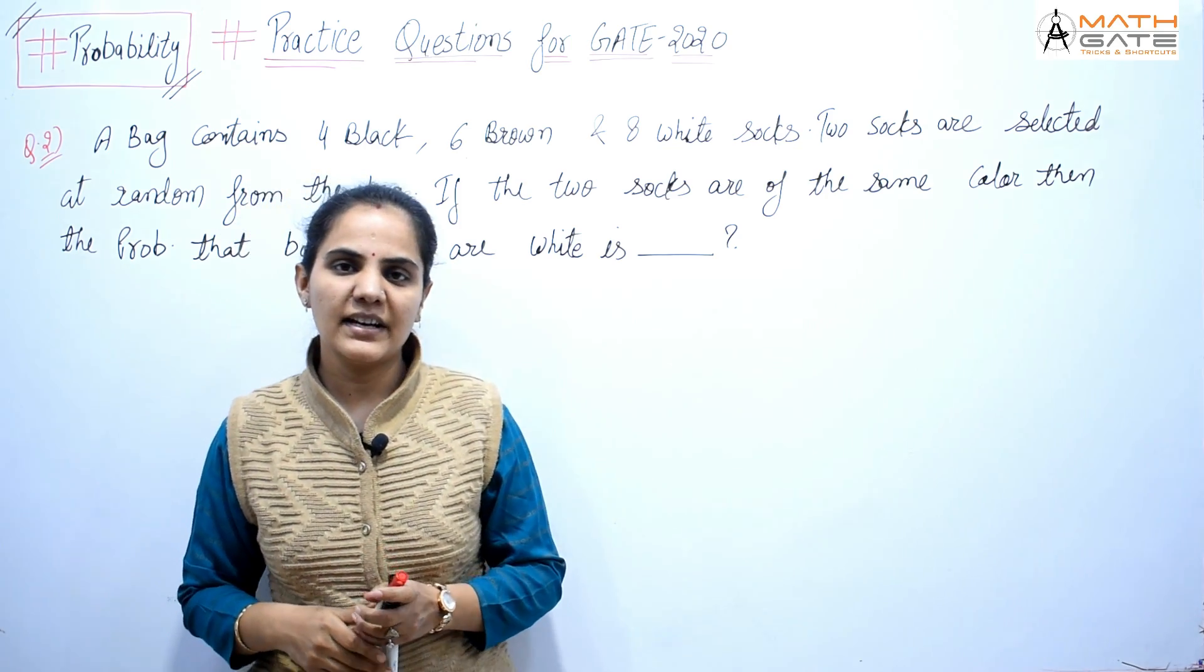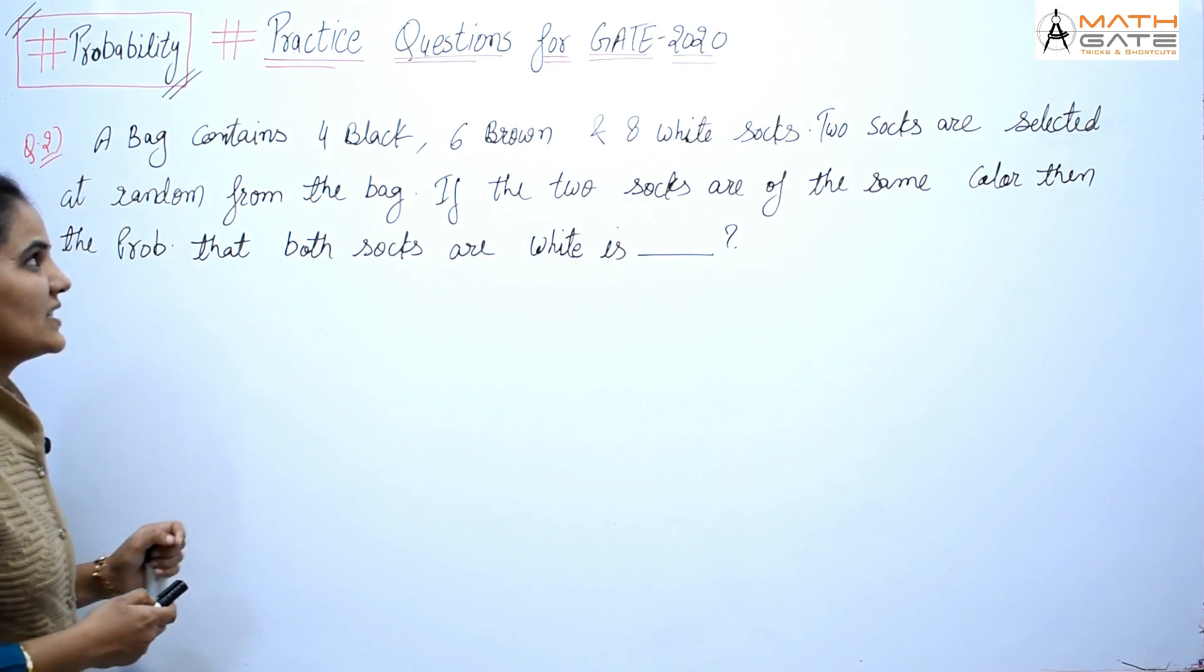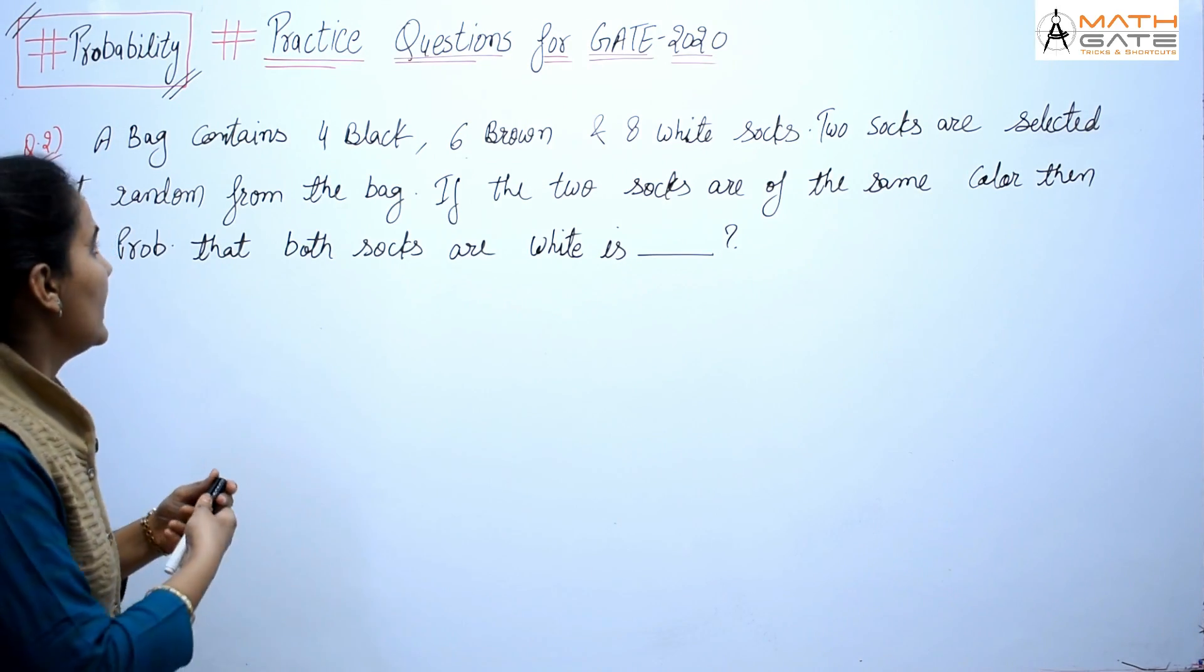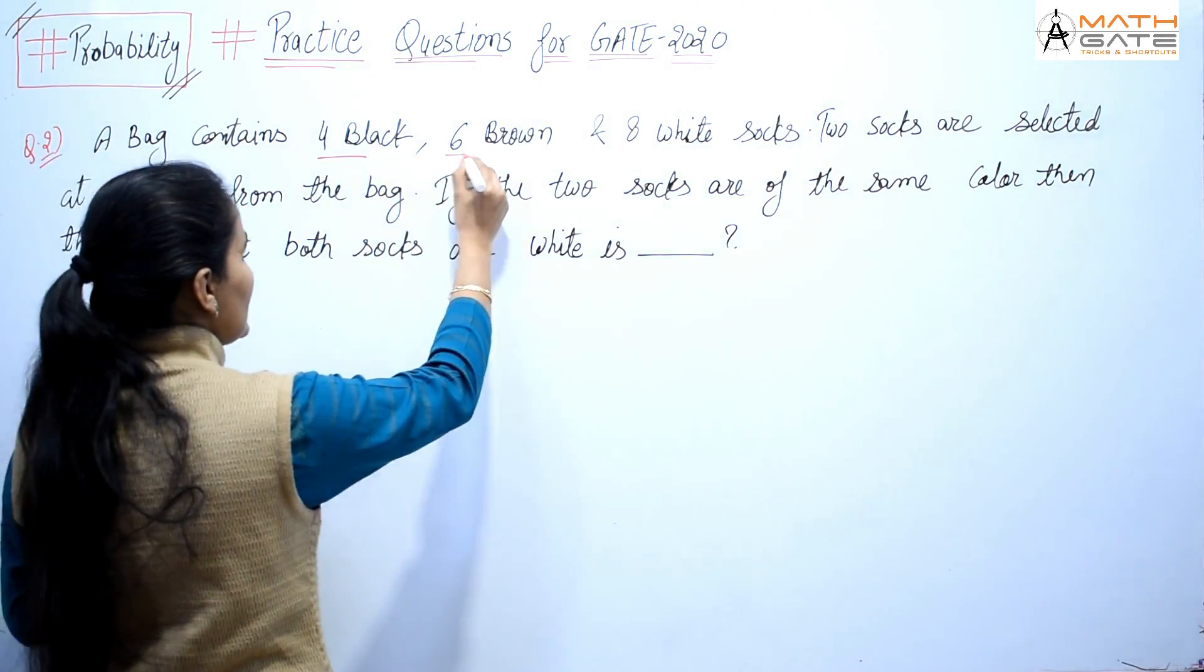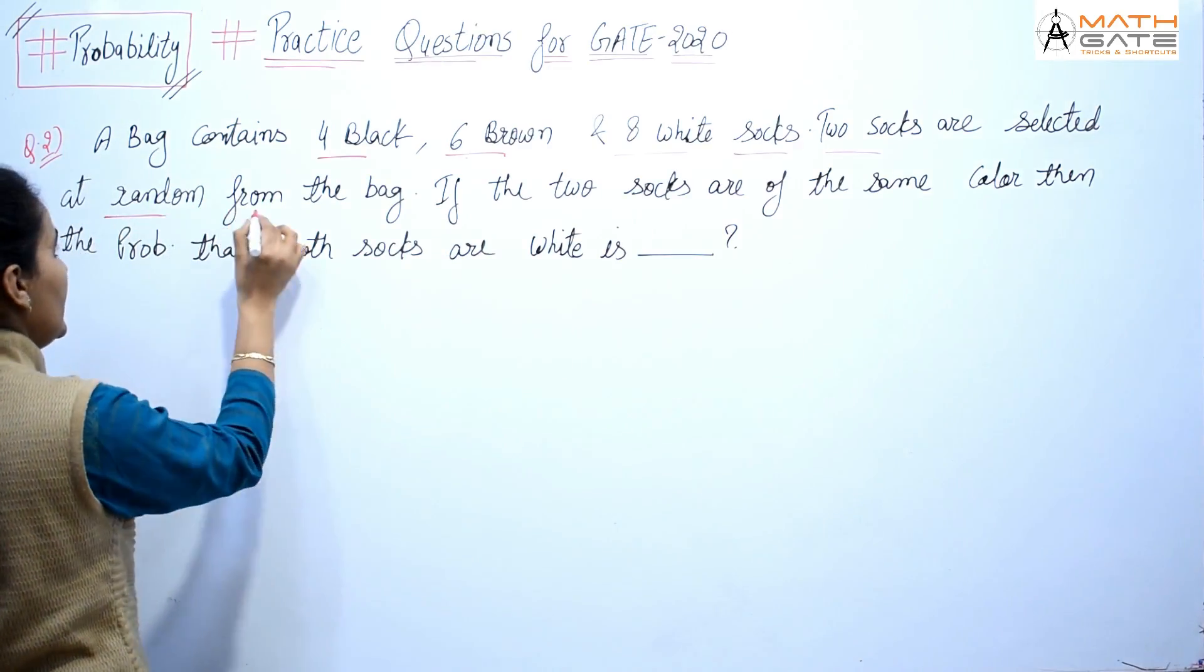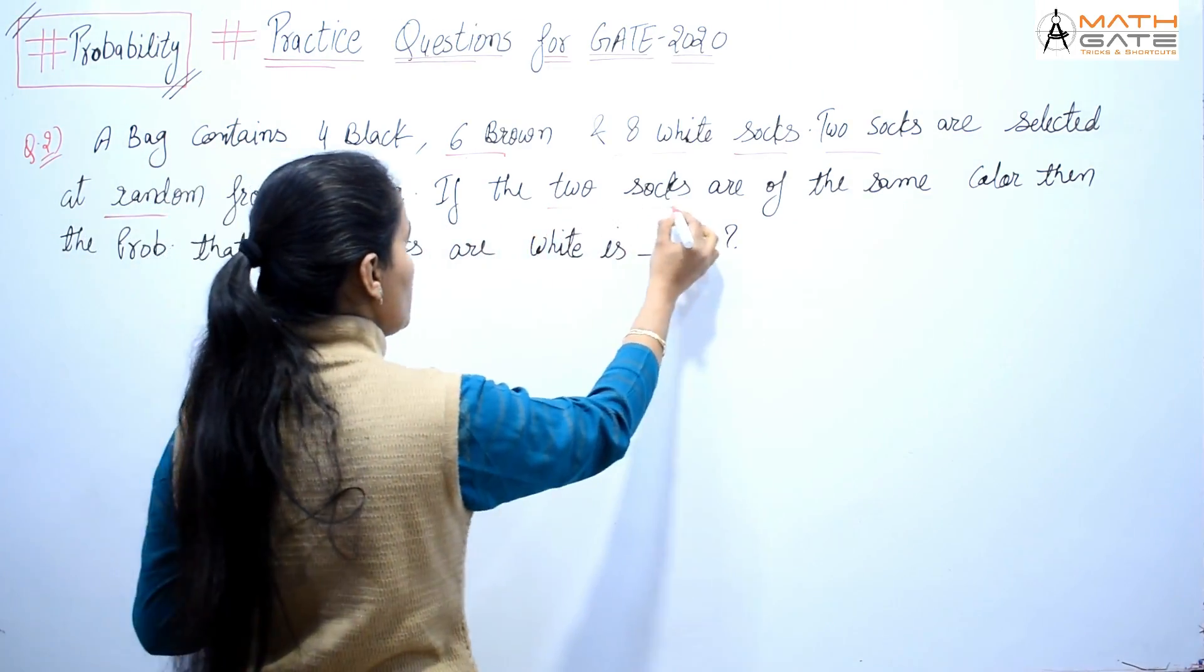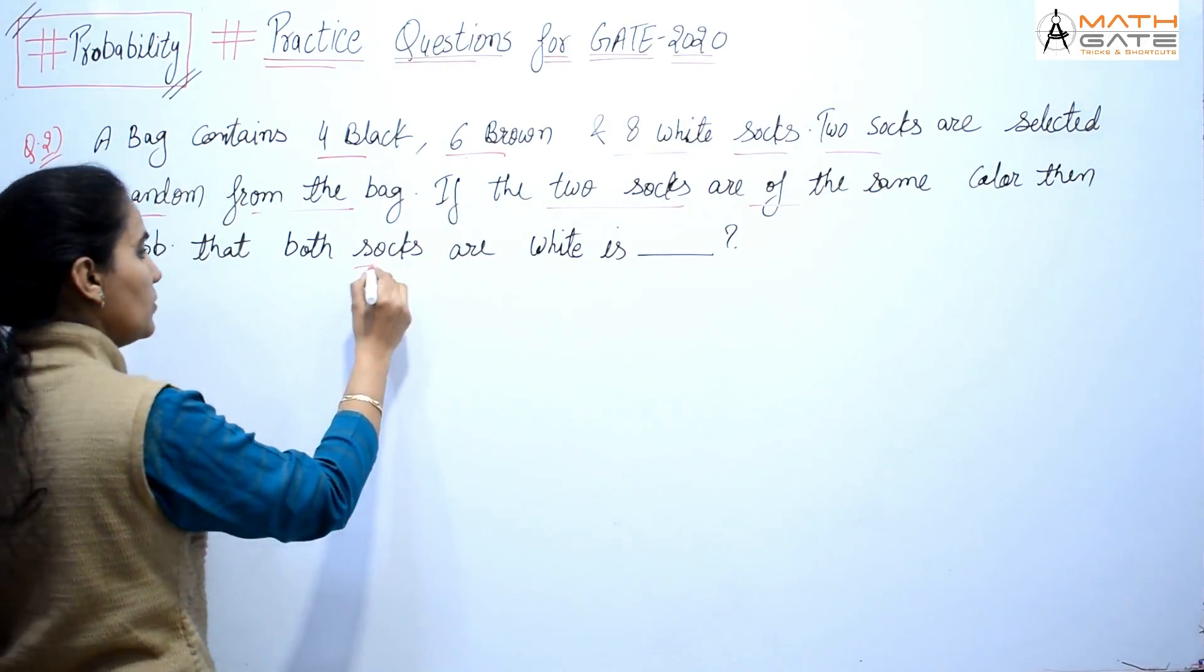Hey students, welcome to MathGate. Let's discuss the next question of probability for our practice session of GATE 2020. The question is: a bag contains 4 black, 6 brown, and 8 white socks. Two socks are selected at random from the bag. If the two socks are of the same color, then the probability that both socks are white is what?